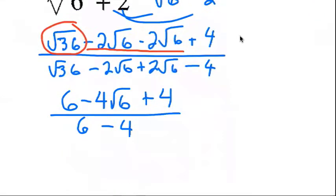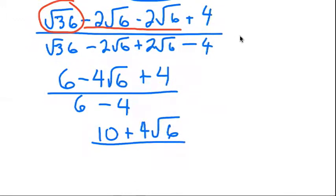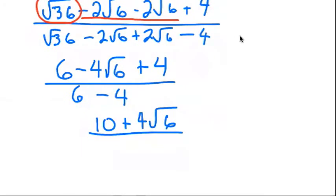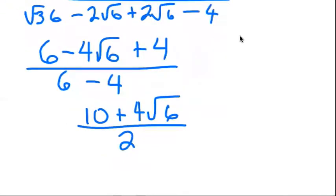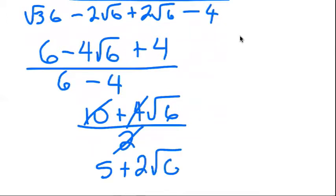Simplify my numerator: 6 and 4 is 10, plus 4 square root 6, all over — divided by 10. 6 minus 4 is 2. And again, reduce by 2 gives me 5, by 2 gives me 2, and this cancels. So the answer is 5 plus 2 square root 6.